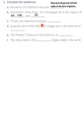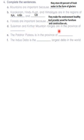Forests are a very good source of oxygen — they improve our environment and provide us with wood required for making furniture, housing, and many other things. They make the environment healthy and provide wood for furniture and construction. The Suleiman and Kirthar mountain ranges are not completely in one province: Kirthar is in Sindh, while the Suleiman range spans Khyber Pakhtunkhwa, Punjab, and Balochistan. So the answer is: Sindh, Balochistan, KPK, and Punjab.